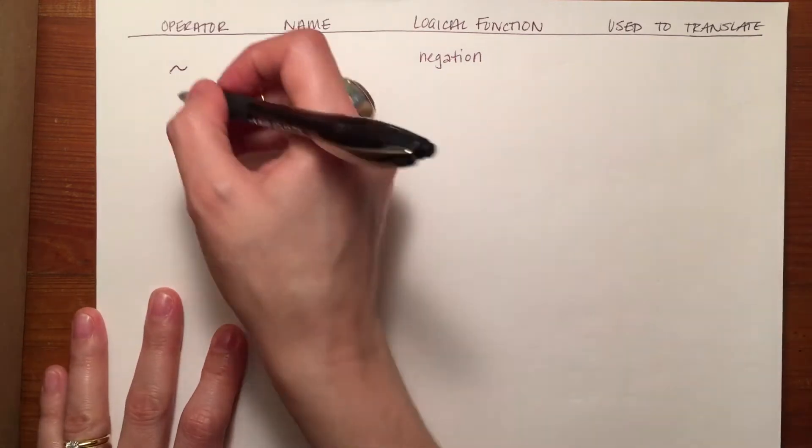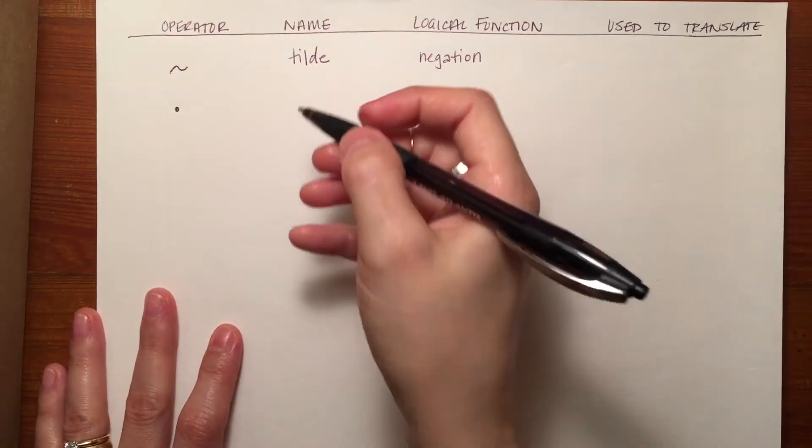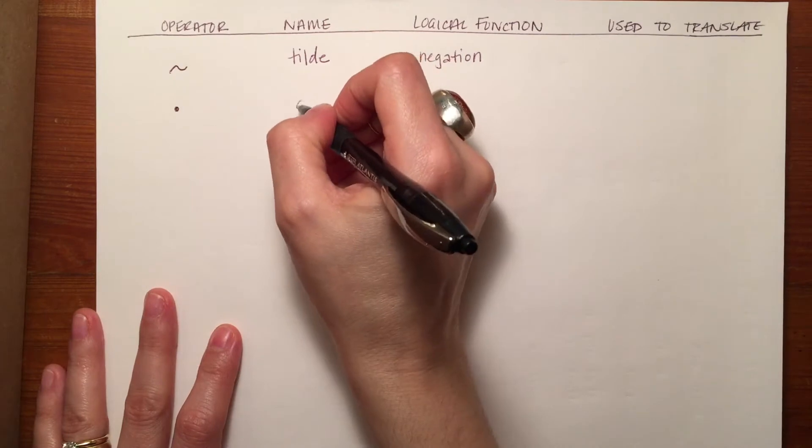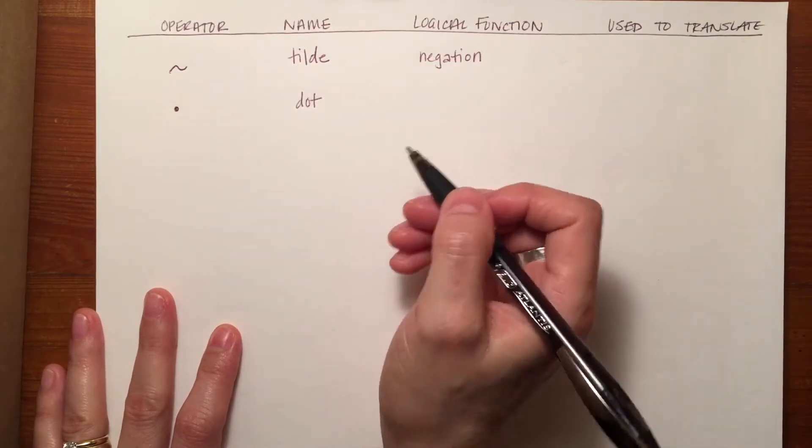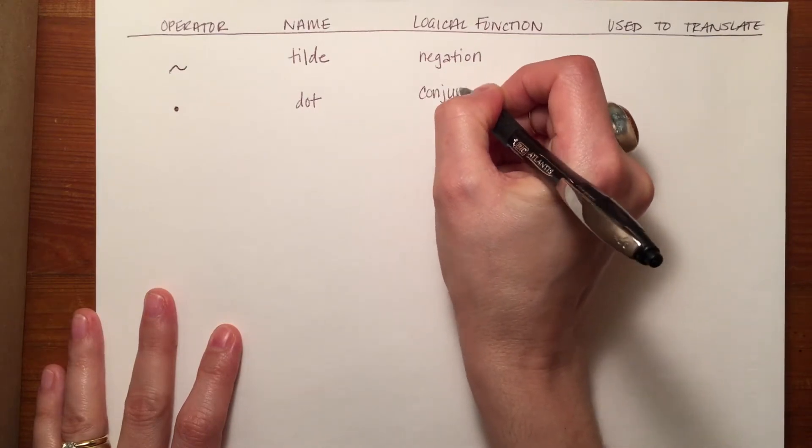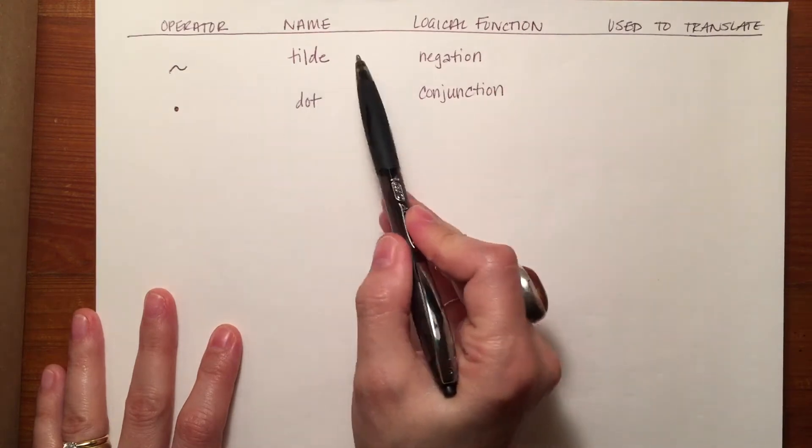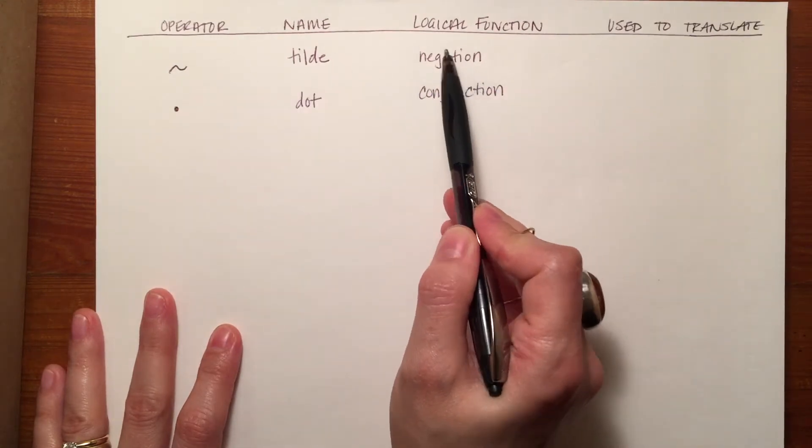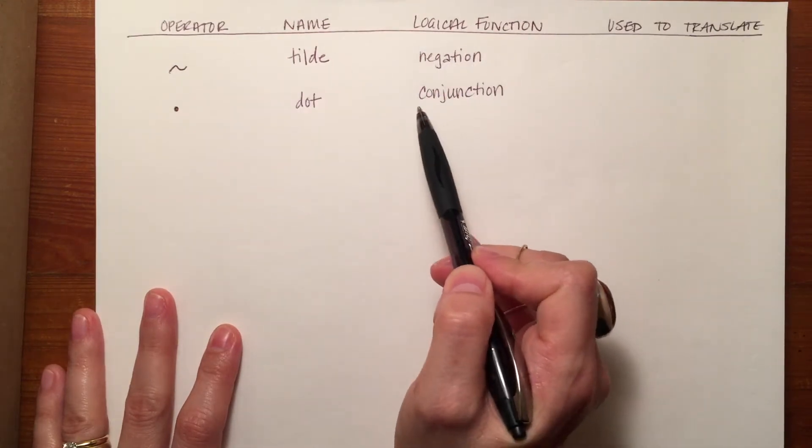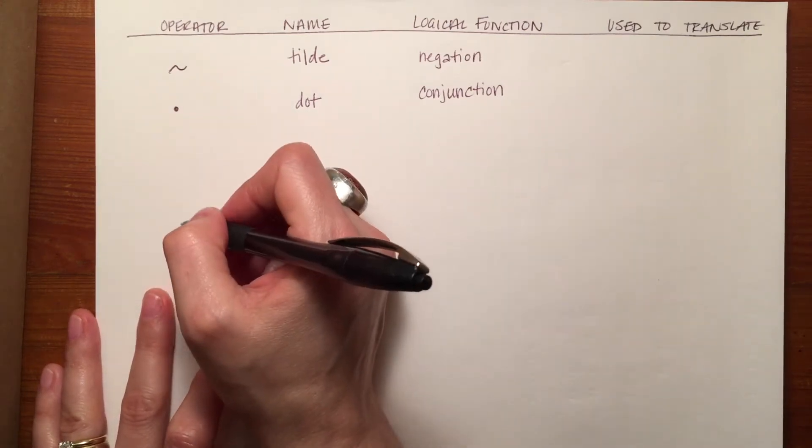The second logical operator is this, and like many of its fellows, it has a very obvious name. It's called the dot. The dot's logical function is conjunction or bringing things together. The tilde will make things negated or the opposite of what they are. The dot will bring them together.